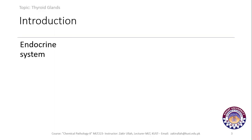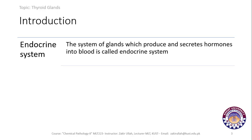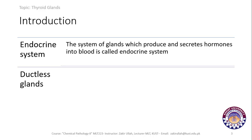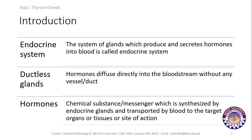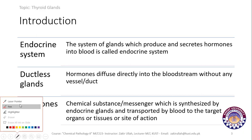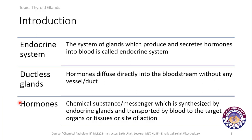Coming to the introduction of the endocrine system: it is a system of glands which produce and secrete hormones into the blood. These glands pour their substances directly into the bloodstream — they are ductless glands, and hormones diffuse directly into the blood without any vessel or duct. Hormones are chemical substances synthesized by the endocrine glands and transported by blood to their target cells, organs, or site of action.